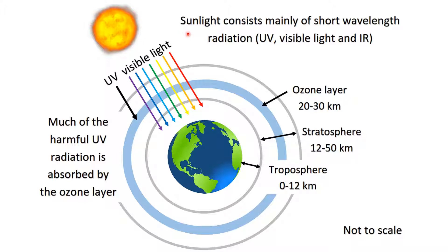Sunlight consists mainly of short wavelength radiation — that's mainly UV, visible light and infrared. As we can see, visible light is able to pass through the ozone layer. Much of the harmful UV radiation from the sun is absorbed by the ozone layer. Next we'll look at how this harmful UV radiation is absorbed in more detail.